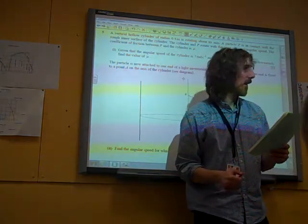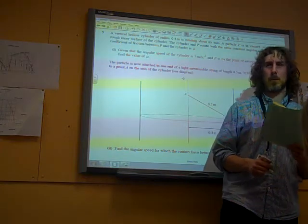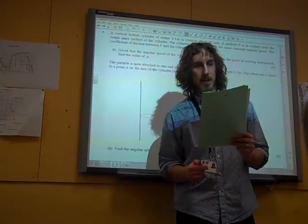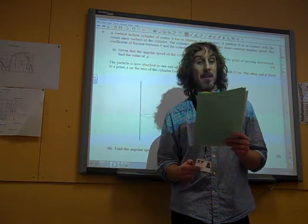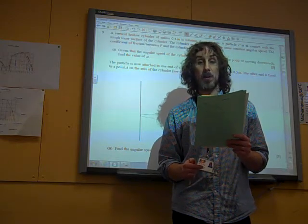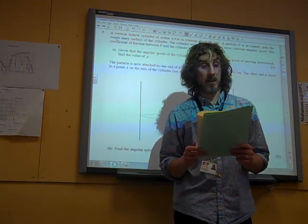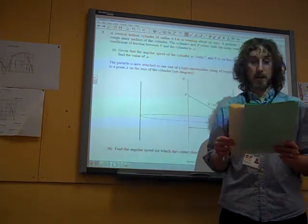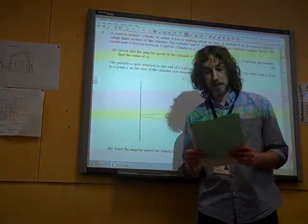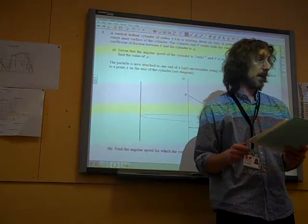A vertical hollow cylinder of radius 0.5 metres is rotating about its axis. A particle P is in contact with the rough inner surface of the cylinder. The cylinder and P rotate with the same constant angular speed. The coefficient of friction between P and the cylinder is mu. Given that the angular speed of the cylinder is 7 radians per second and P is on the point of moving downwards, find the value of mu.